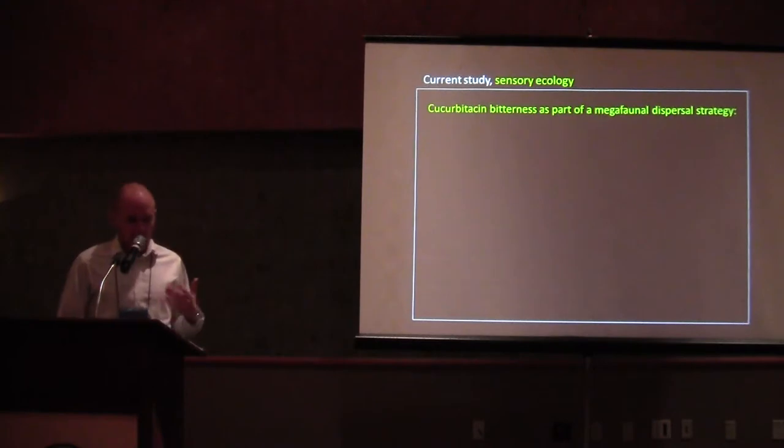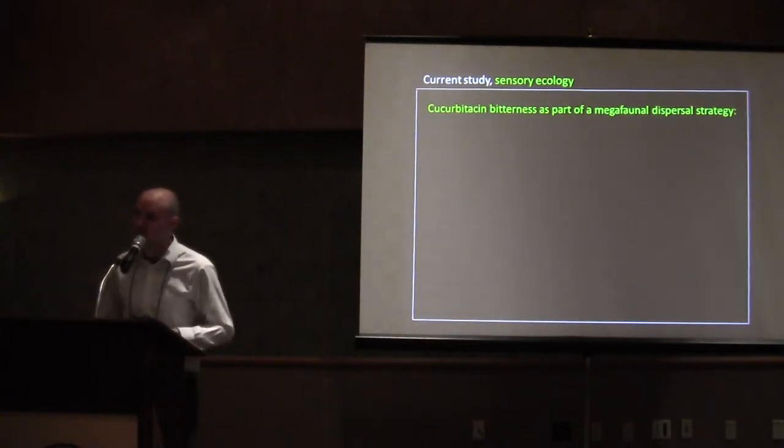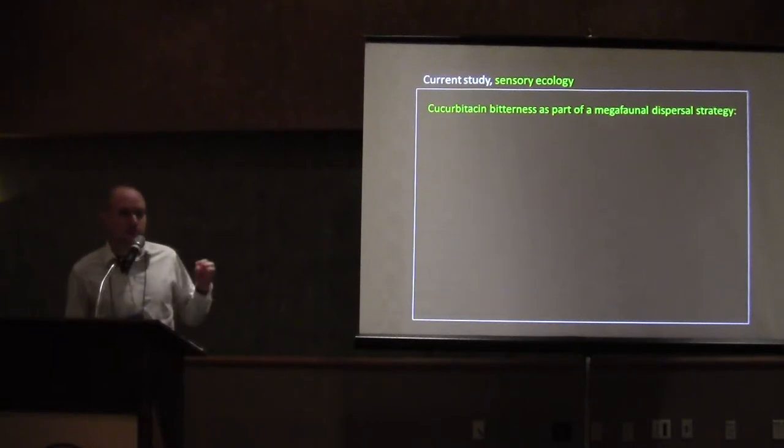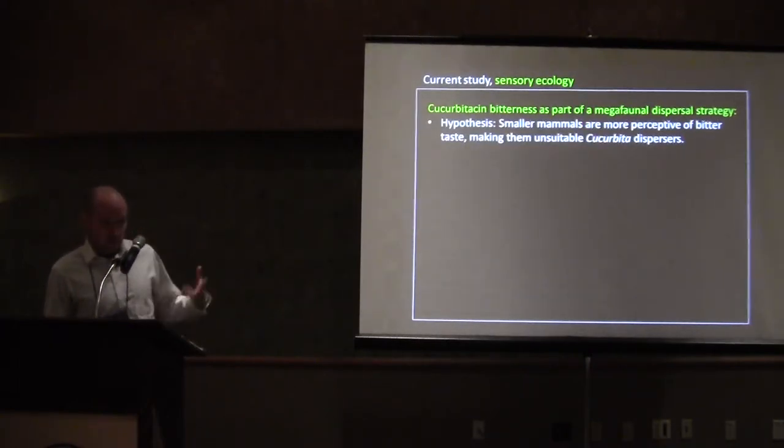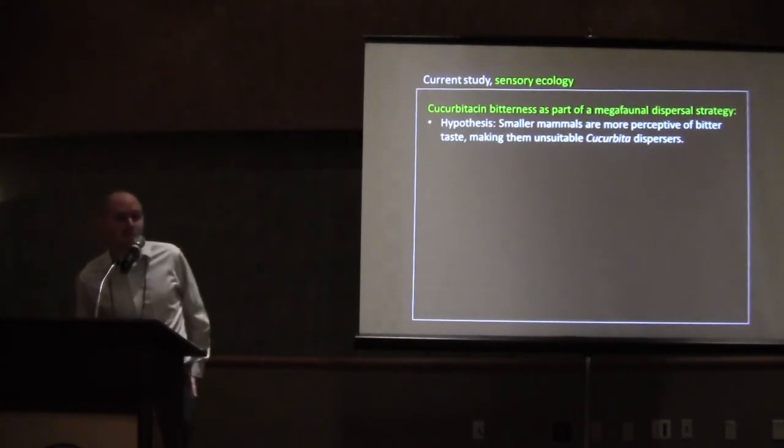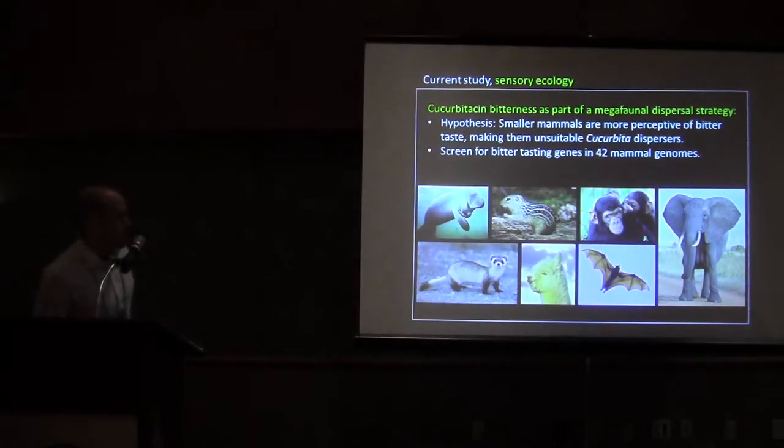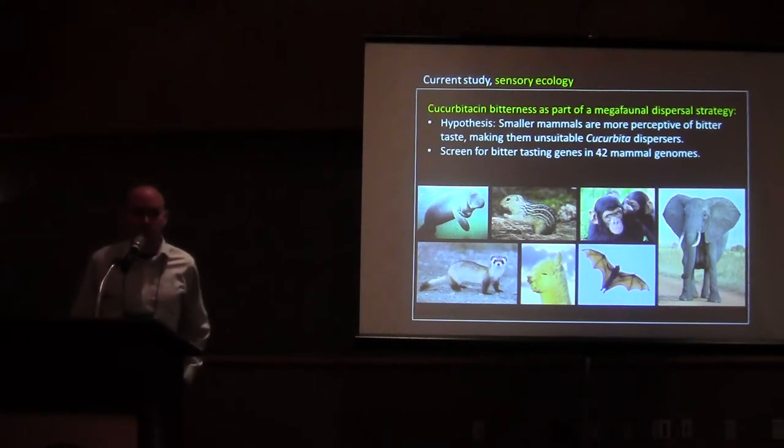To test, we wanted to go into this to test the decline of the wild population simultaneously with trying to understand from an archaeogenomic perspective the emergence of these domestic lineages in order to try and paint a holistic picture of what's going on. The first part is focusing on the sensory ecology and specifically testing this cucurbitacin bitterness, this chemical defense, as a particular part of a megafaunal dispersal strategy. So the specific hypothesis going into this is that smaller mammals are actually much more receptive of bitter tasting compounds, making them unsuitable cucurbitacin dispersers. The reason for this hypothesis has to do with the fact that physiologically, a small mammal needs to be able to detect these environmental toxins much more acutely than a very large one.